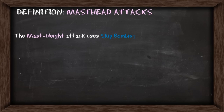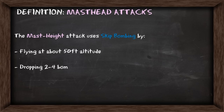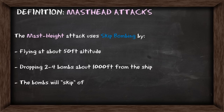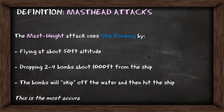The mast height attack uses skip bombing by flying at about 50 feet of altitude and dropping two to four bombs around 1,000 feet from the ship. The bombs then skip off the water and hit the ship. This is the most accurate method due to the low altitude and distance at bomb release.